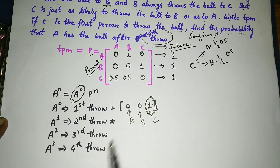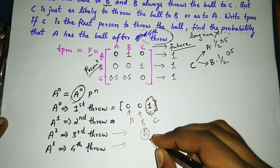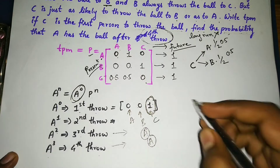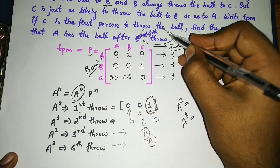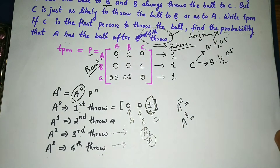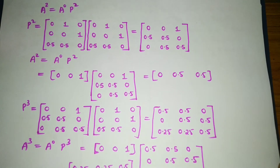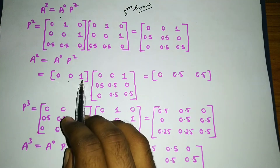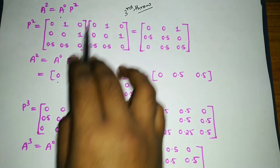Note that a^1 corresponds to the second throw, a^2 to the third throw, and a^3 to the fourth throw. I will first find a^2 (third throw) to show something interesting, and then a^3 (fourth throw). To find P², we multiply P¹ × P¹, which is the TPM multiplied by itself.